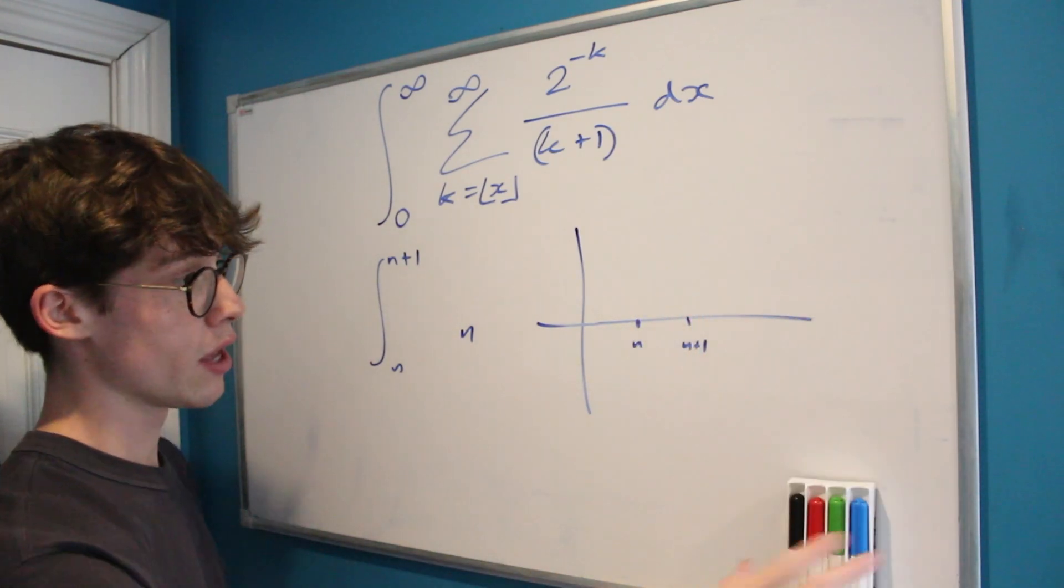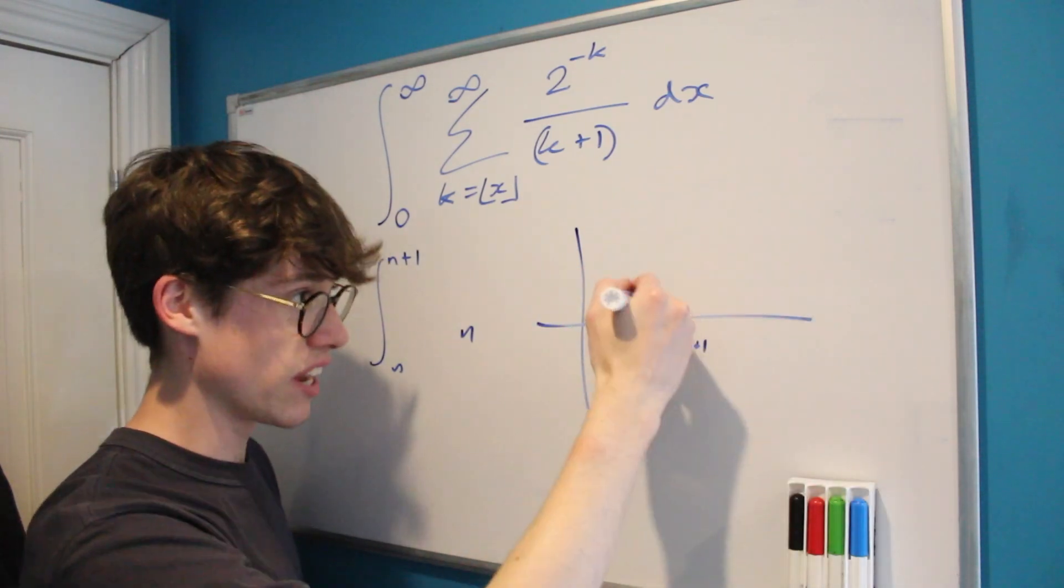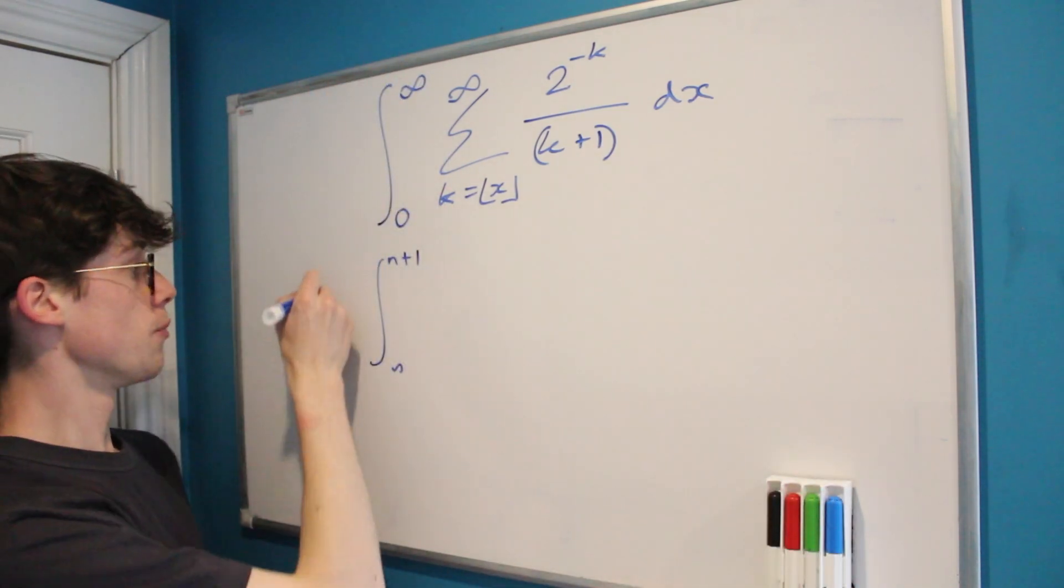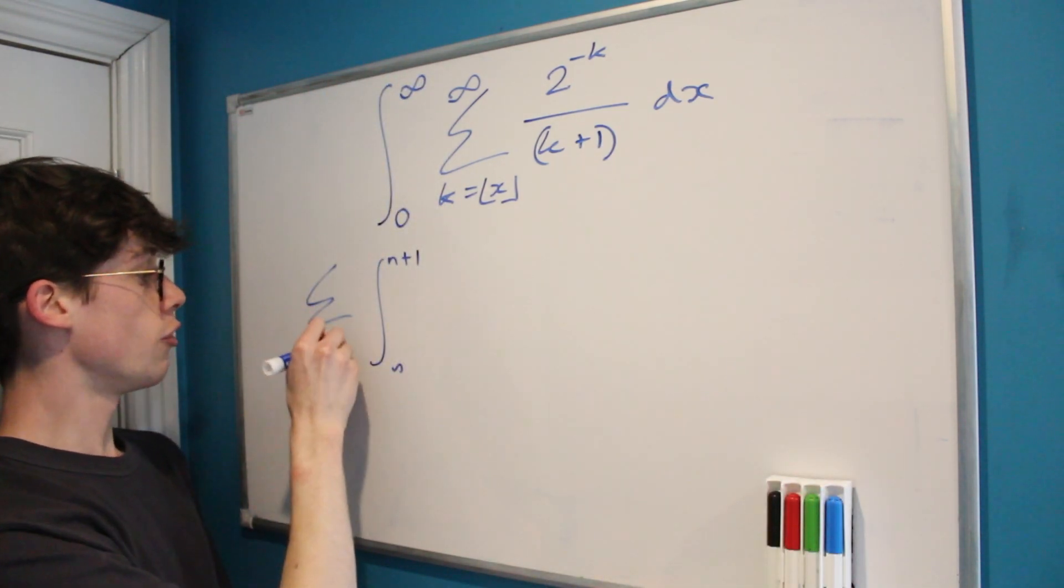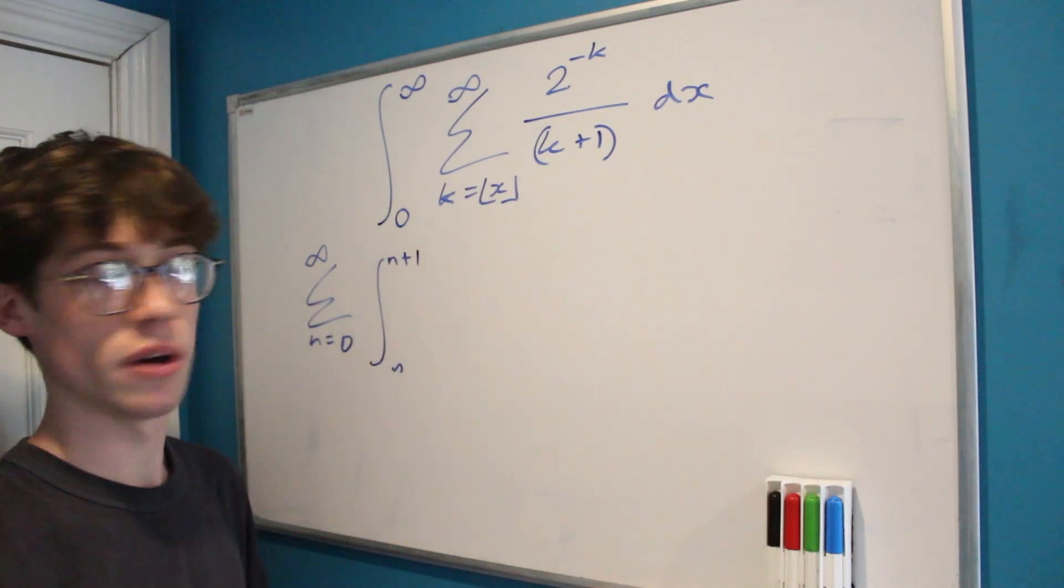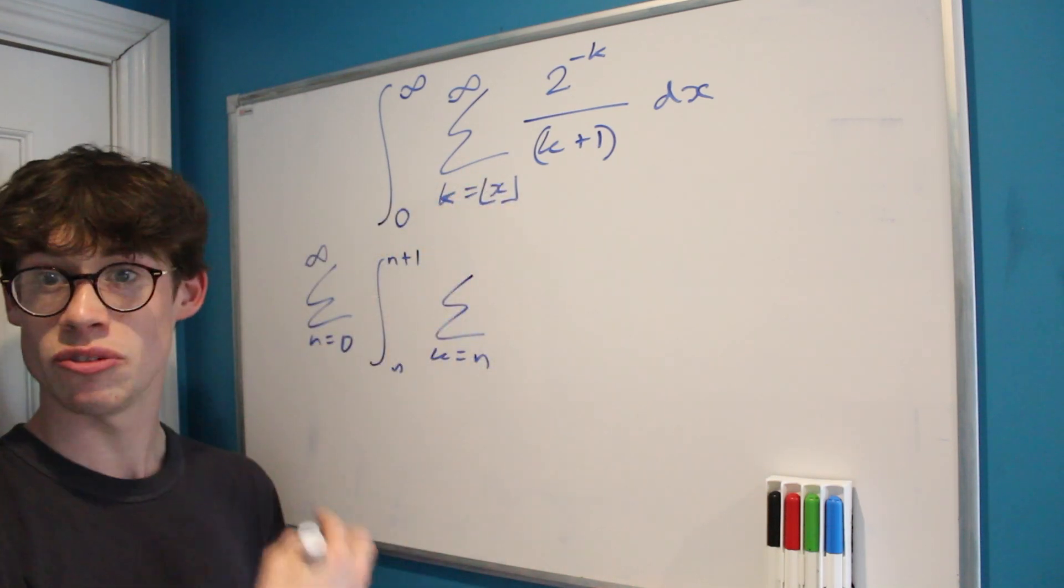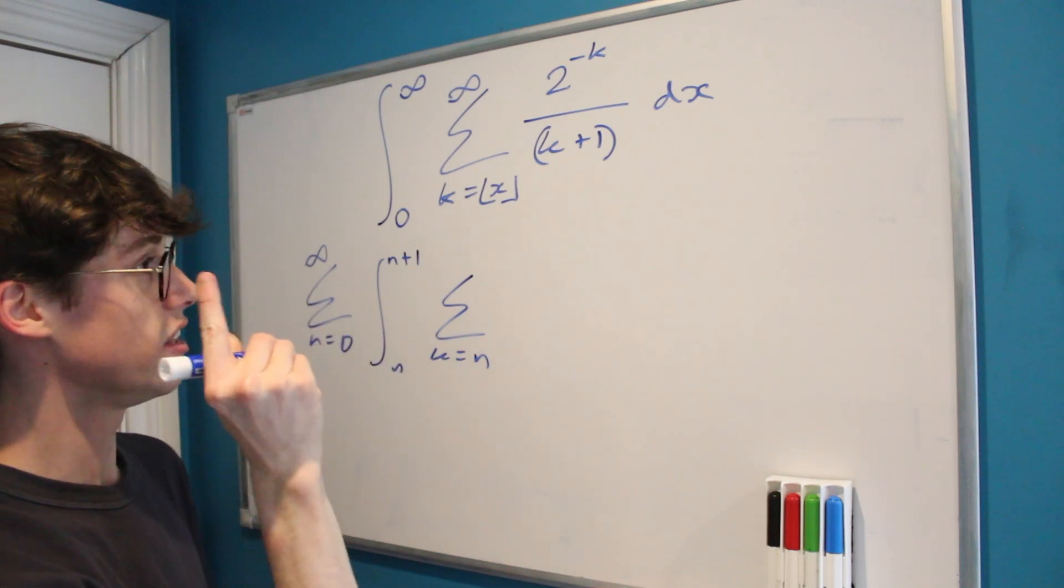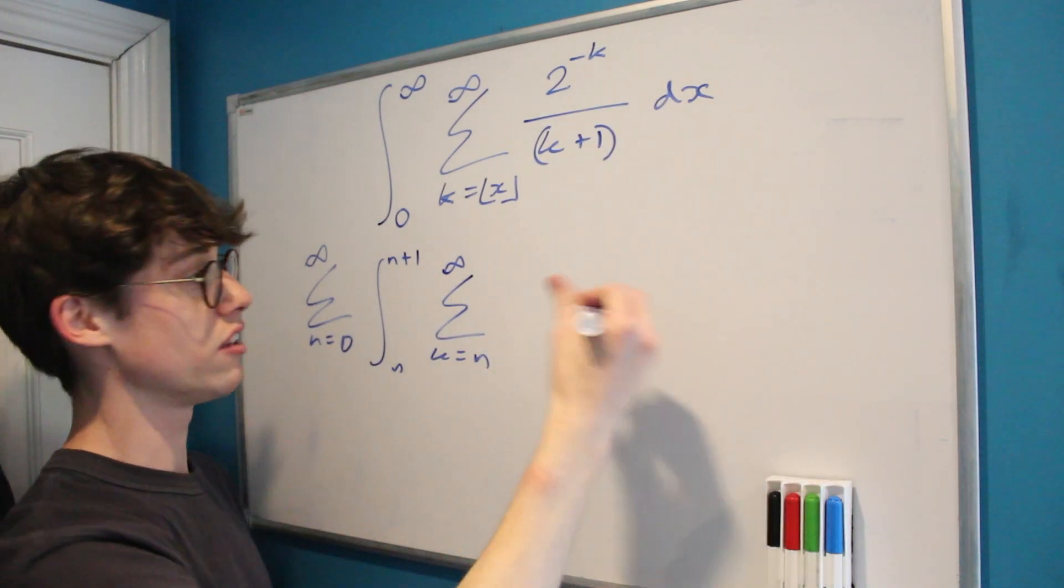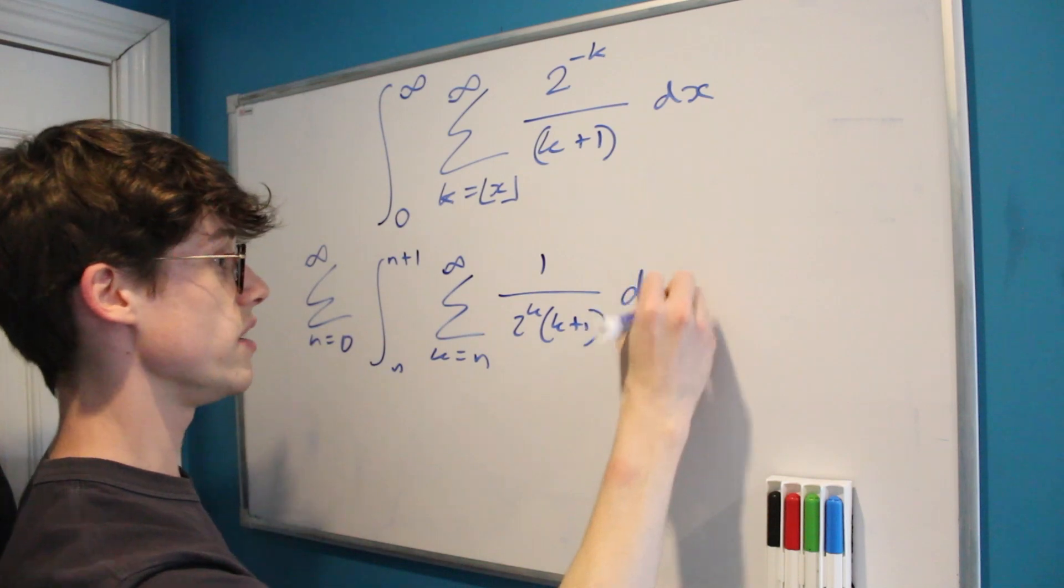So in between n and n plus 1, any value of x is going to get truncated down to n. And that means that we can write our integral as the sum from n equals 0 to infinity, because of course we can add up our integrals in bars of width 1, of the sum from k equals n (because floor x will equal n within these bounds) to infinity of - I'm going to move my 2 to the k down because it's a negative exponent - 1 over 2 to the k times k plus 1, dx.